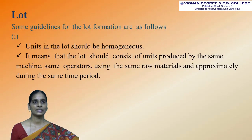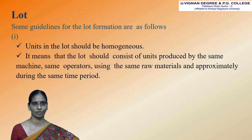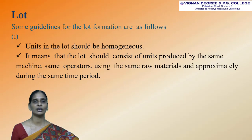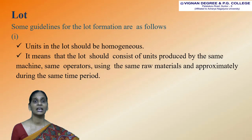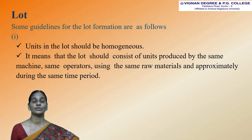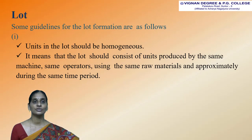Here are some guidelines for lot formation. The first guideline is: units in the lot should be homogeneous. This means that the lot should consist of units produced by the same machine, same operators, using the same raw materials and approximately during the same time period.